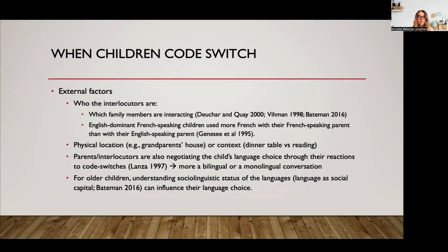The sociolinguistic status of the language can also influence language choice for slightly older children. In my own work, I saw that my daughter realized she could use Romanian as social capital — she could negotiate getting things done or doing more of what she wanted by using Romanian with me or my parents, because we were trying to encourage her to use it. She understood that in our house, if she wanted to accomplish something, she could use Romanian — for example, saying something in Romanian to make her grandparents want to visit longer. Kids become aware of how the sociolinguistic status of language within their circles can play a role in which language they should be using for what purpose.